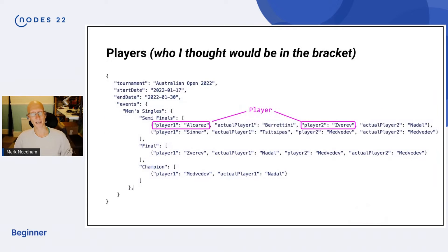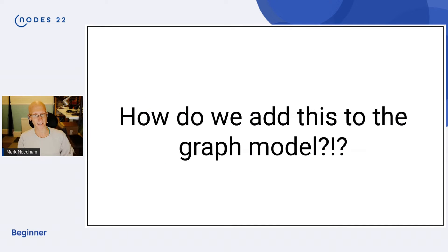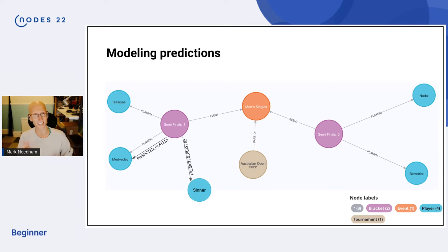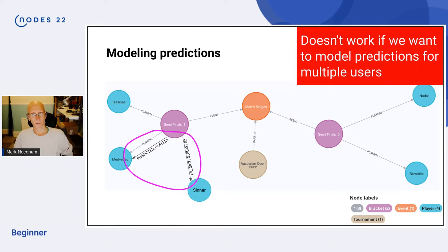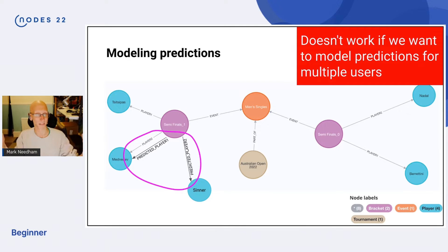So that's fine so far — but then the question became: how are we going to model the players who I thought were going to get here? We want to model it for multiple people — me, Alex, Michael — and track all of us to see how well we're doing against each other. One way I initially thought was to add predicted player one and predicted player two directly onto the bracket. But that doesn't work if we want predictions for multiple users. You'd end up embedding a person's name inside the relationship type, and that doesn't scale well at all.